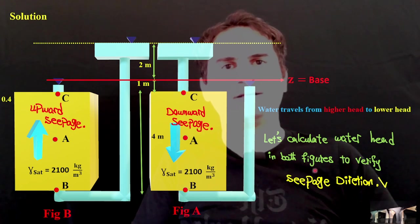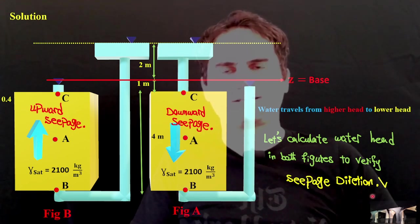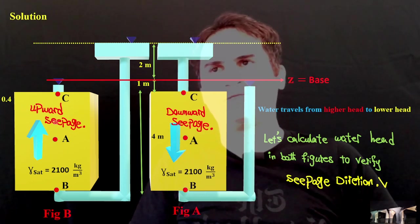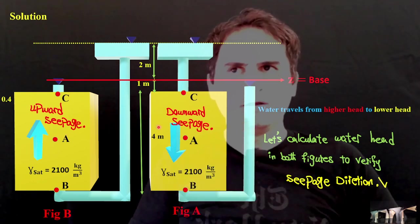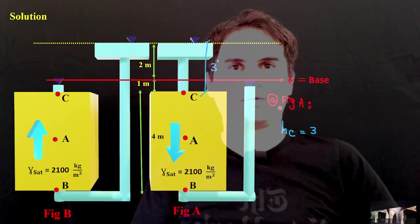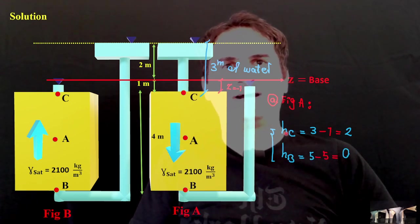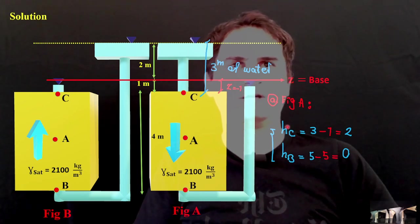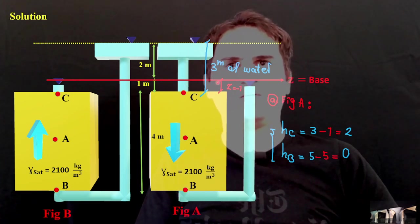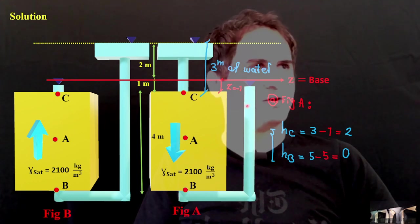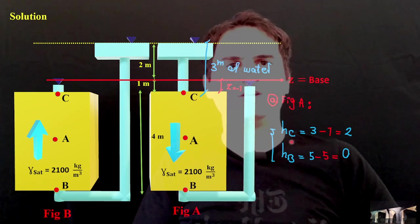Let's calculate water head in both figures to verify our seepage direction. This is the downward seepage like what I talked about, and also this is the upward seepage based off what we can see in the figure. If this is our base C, for example, at figure A, we can have H_C is equal to the amount of water at the top of point C, which is 2 meters plus 1 meter is 3 meters of water on top of point C, minus a downward dive of negative 1 base of our C. That's a negative 1 meter downward from our base. H of C is equal to 2.